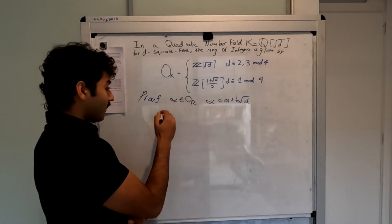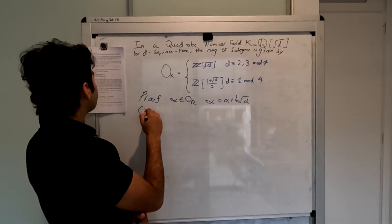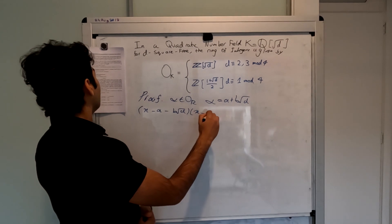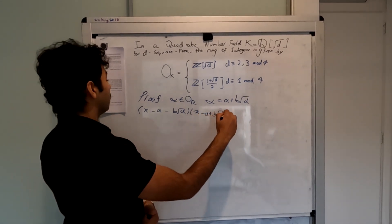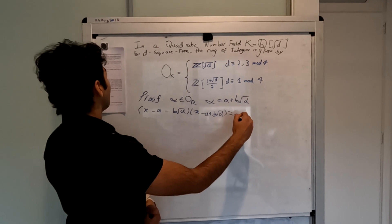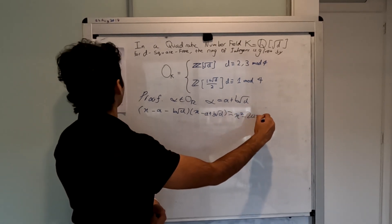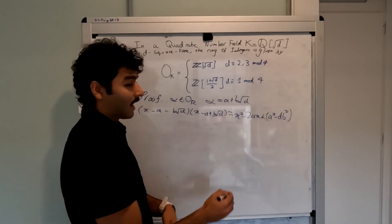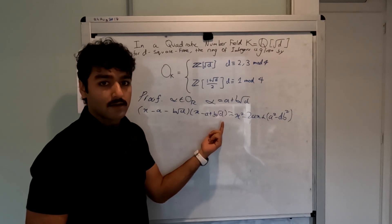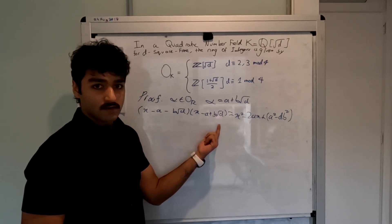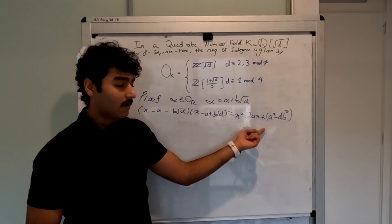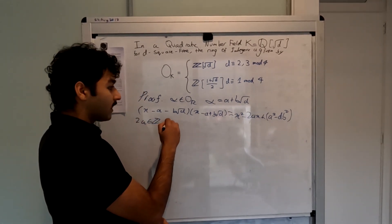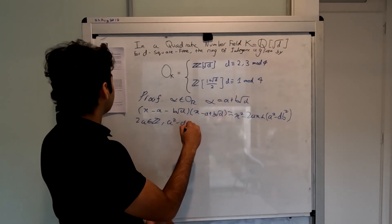The minimal polynomial of alpha is (x − a − b√d)(x − a + b√d), which simplifies as x squared minus 2ax plus a squared minus db squared. So if this is alpha's minimal polynomial and alpha is an algebraic integer, each of these coefficients must be integers. So we get that 2a is in Z and a squared minus db squared is in Z.